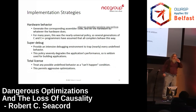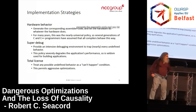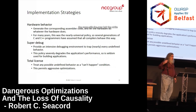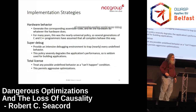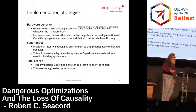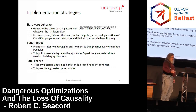Compiler vendors use various implementation strategies. One strategy is hardware behavior, where you generate the assembly code and let the hardware do whatever the hardware does — for many years that was how C worked. Another model is super debug, where you trap any undefined behavior: great for debugging but very impractical for deploying code because of significant slowdowns. Third is total license, where you treat any possible undefined behaviors as a can't-happen condition, which allows you to optimize aggressively.